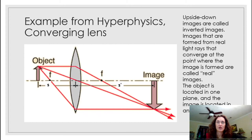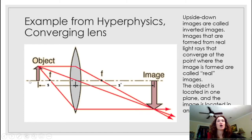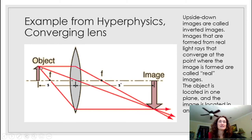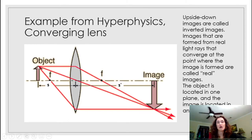Here's the ray diagram with three rays. The base of the object sits on the optical axis, which is perpendicular to the plane of the lens and runs through f on either side. The object is at distance s from the lens — here, larger than the focal length. The easiest ray to understand is the one through the center of the lens: it doesn't bend, it just goes straight. Draw from the arrowhead through the center and keep going in a straight line.